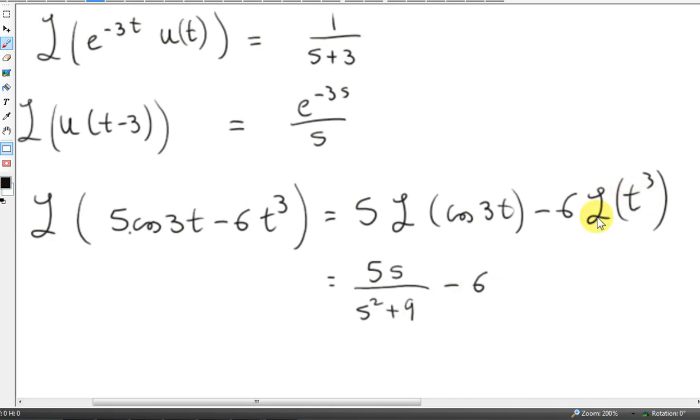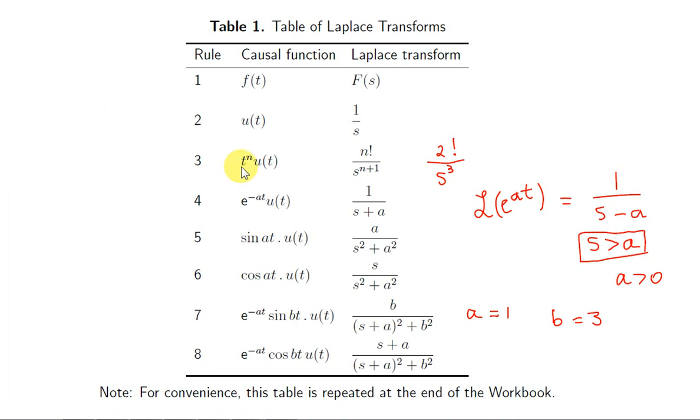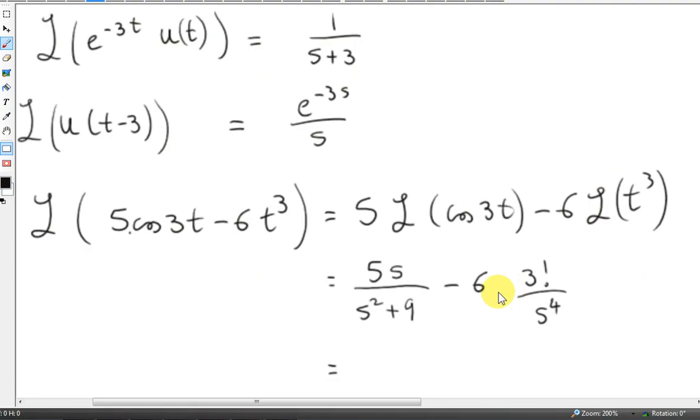Next we want to get L{t³}. To get L{t³}, we look at L{t^n} and replace n with 3. So we get 3!/(s⁴). 3 factorial is 3×2×1, which is 6. So we get -36/s⁴.